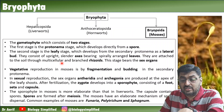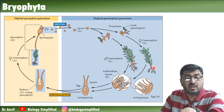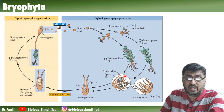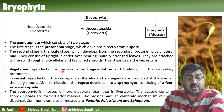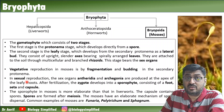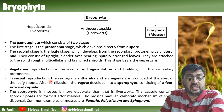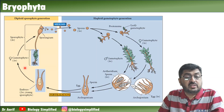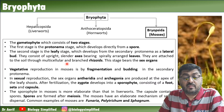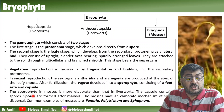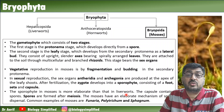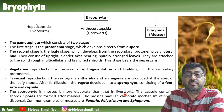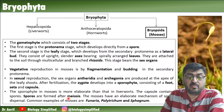Mosses are attached to the soil through multicellular and branched rhizoids. The leafy stage bears the sex organs - archegonia and antheridia. Vegetative reproduction is by fragmentation and budding in the secondary protonema. Sexual reproduction occurs through antheridia and archegonia at the apex of the leafy shoot. The zygote develops into a sporophyte consisting of foot, seta, and capsule. The sporophyte in moss is more elaborate than in liverworts, as moss is a more developed bryophyte.